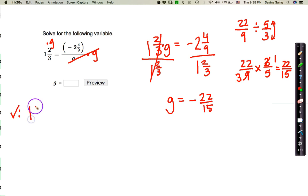First, I'm going to write the problem. 1 and 2 thirds equals negative 2 and 4 ninths divided by g, which I figured out to be negative 22 over 15. Now, you'll notice here, there's no variables anymore because I figured out what g is. So we're not moving things around. We're not doing the inverse of anything. We're just simplifying what we currently have.